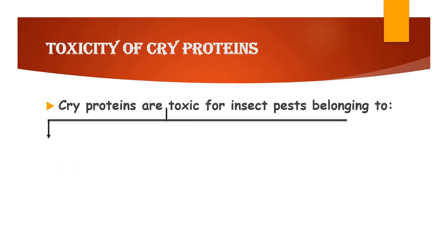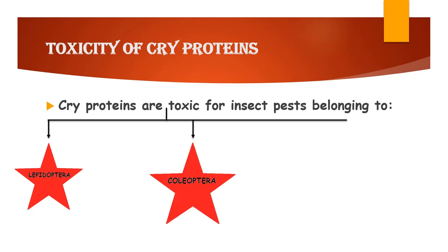Cry proteins are toxic for insect pests belonging to the order Lepidoptera, like butterflies, moths, bollworms, armyworms, etc. Along with that, it is also toxic for insects belonging to the order Coleoptera, like beetles. And also, it is toxic against insect pests belonging to the order Diptera, like mosquitoes and houseflies.